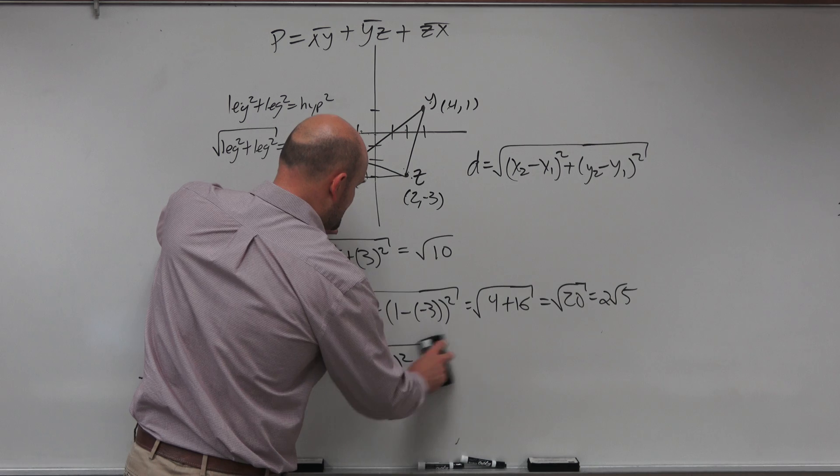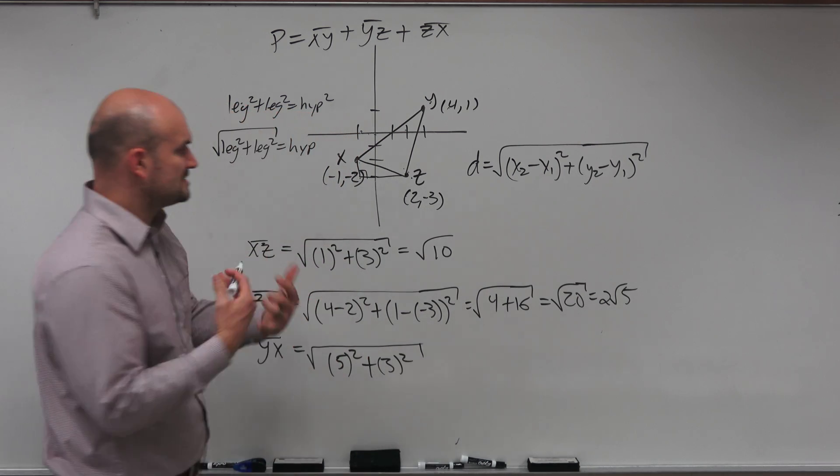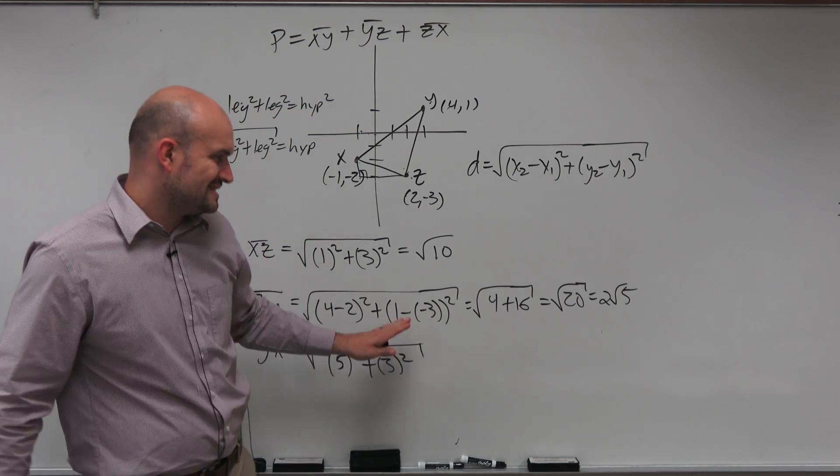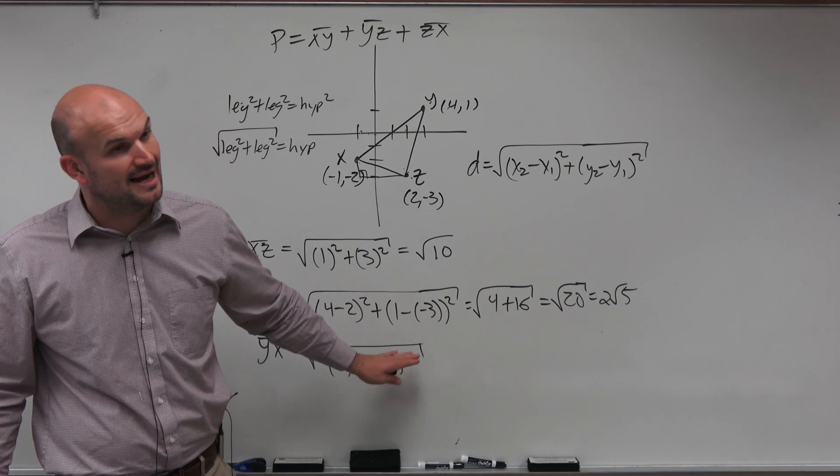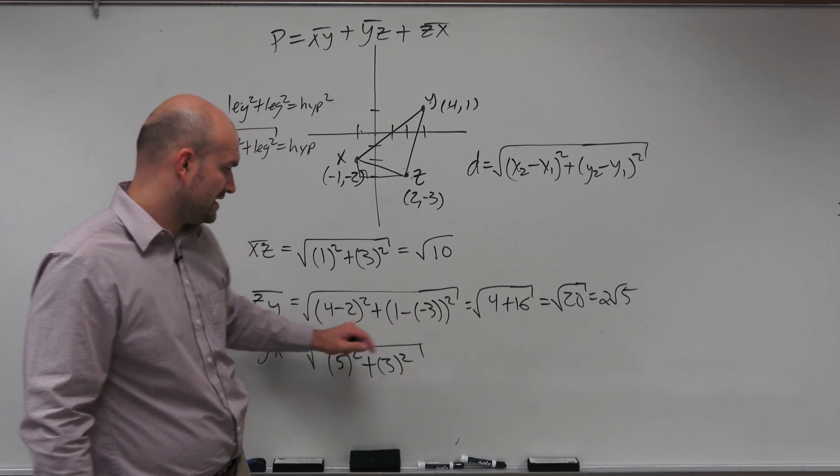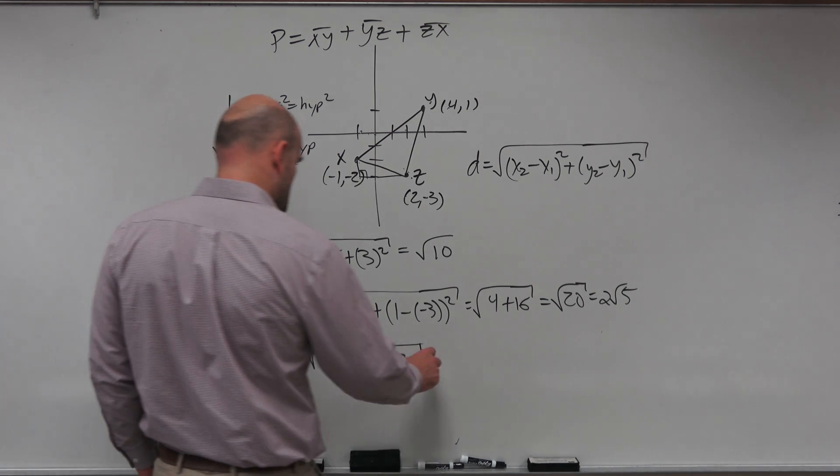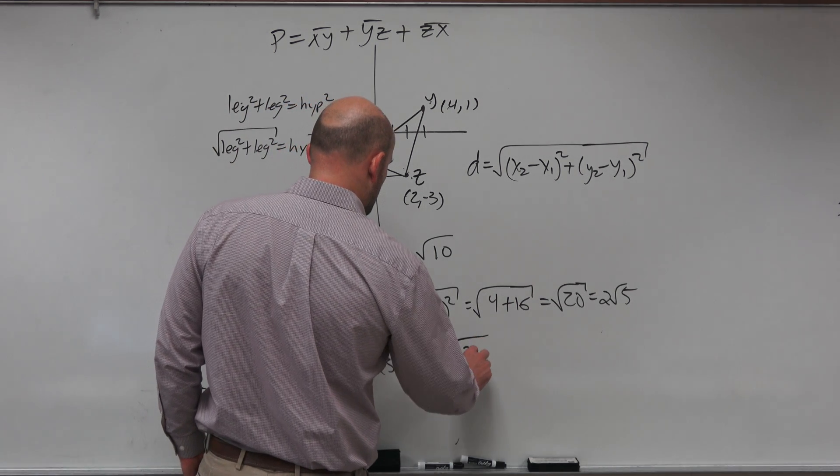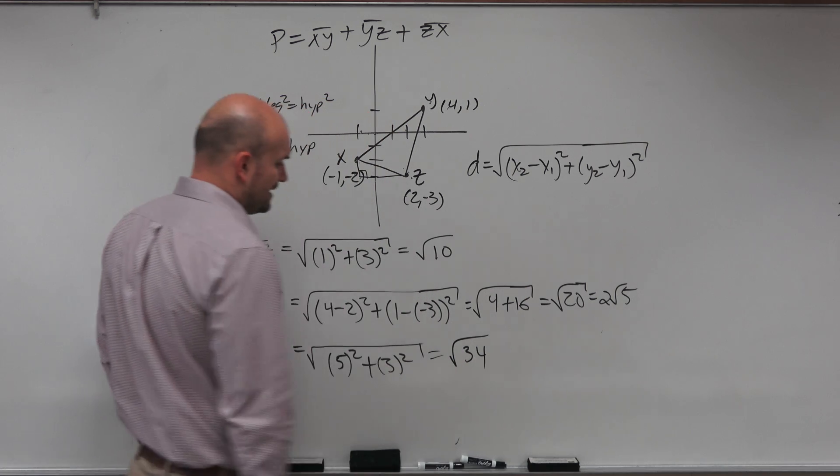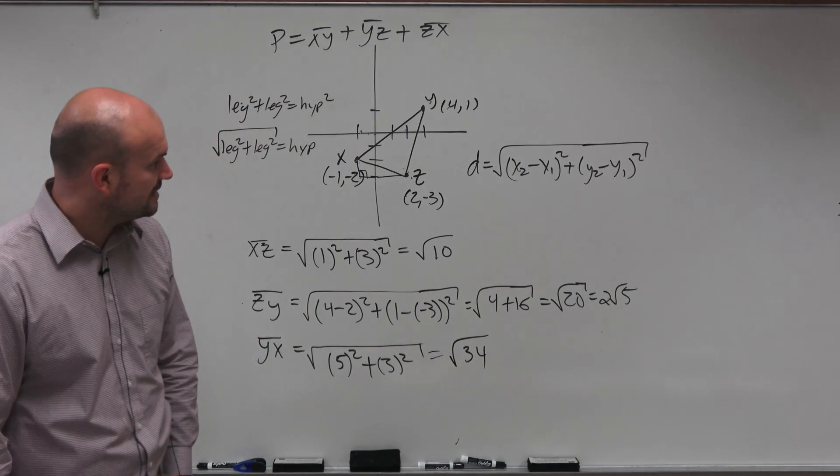So the faster you get at this, the easier it's going to become. But again, you've got to be careful with these negatives. That's why this is helpful to write it out, so you don't make those mistakes with the negatives. And therefore, you have 5 squared is 25 plus 3 squared is 9. So that's going to equal the square root of 34. And that one we cannot simplify, so we'll just leave it as that.